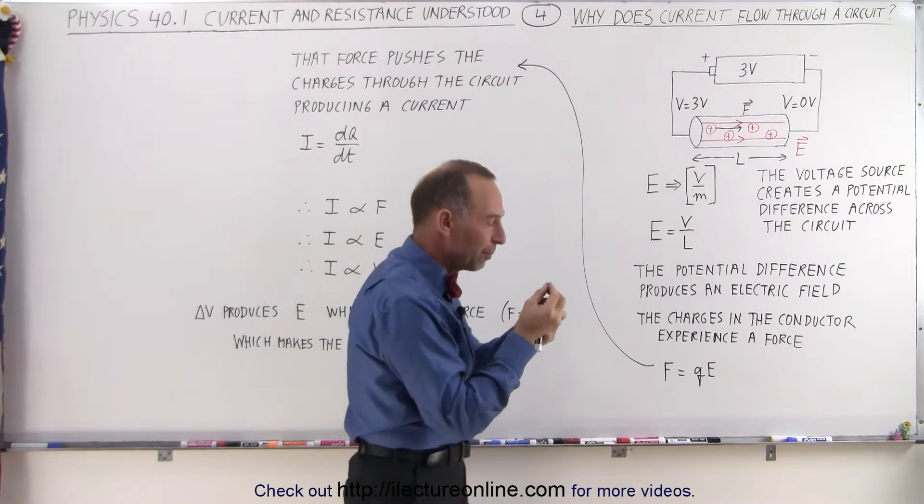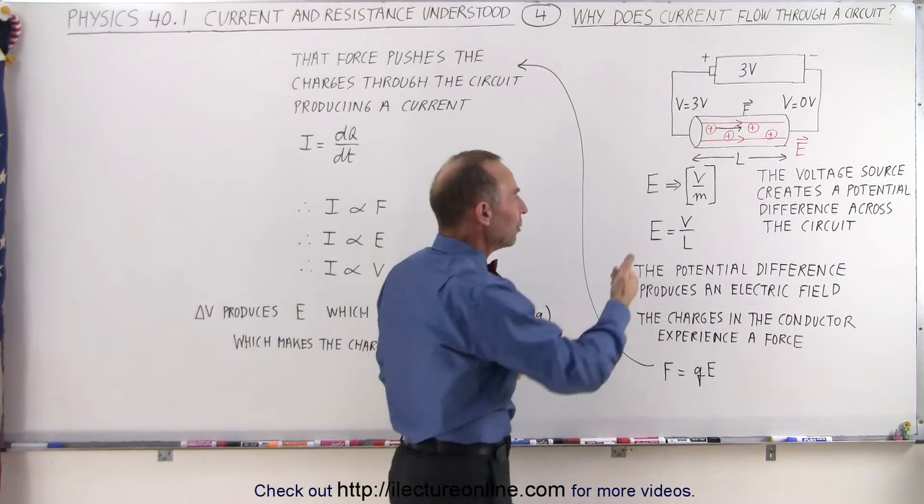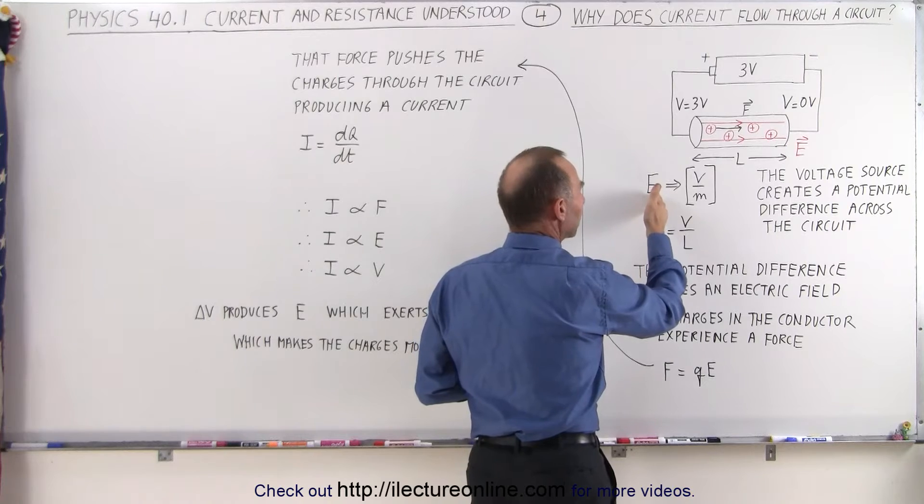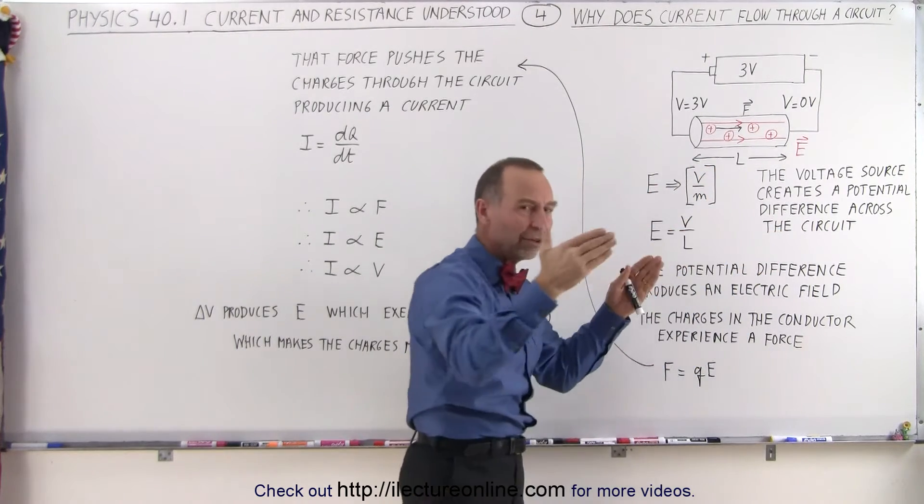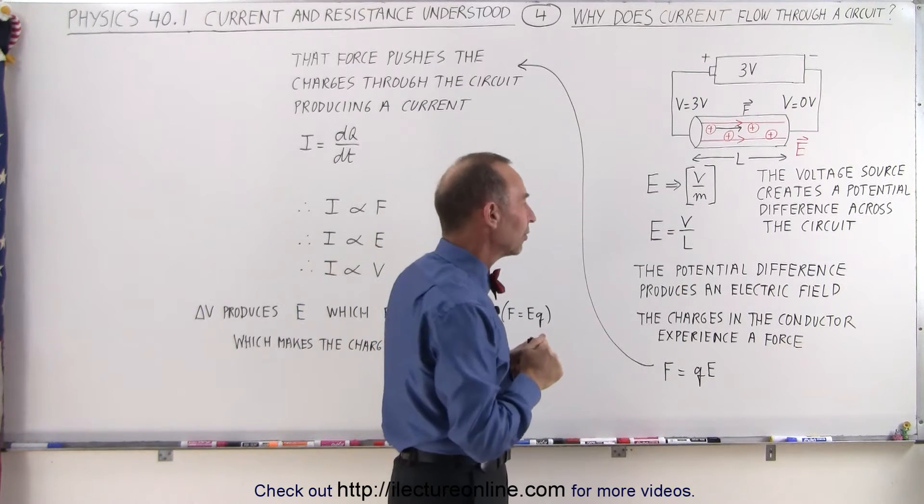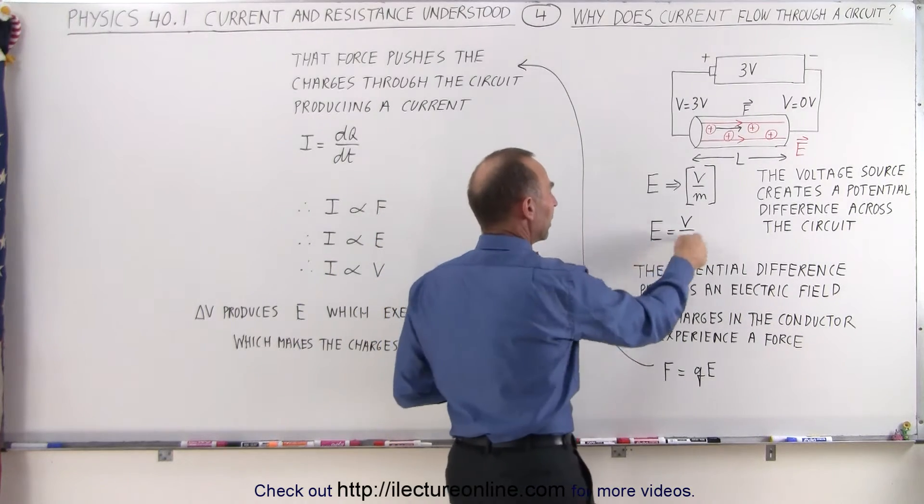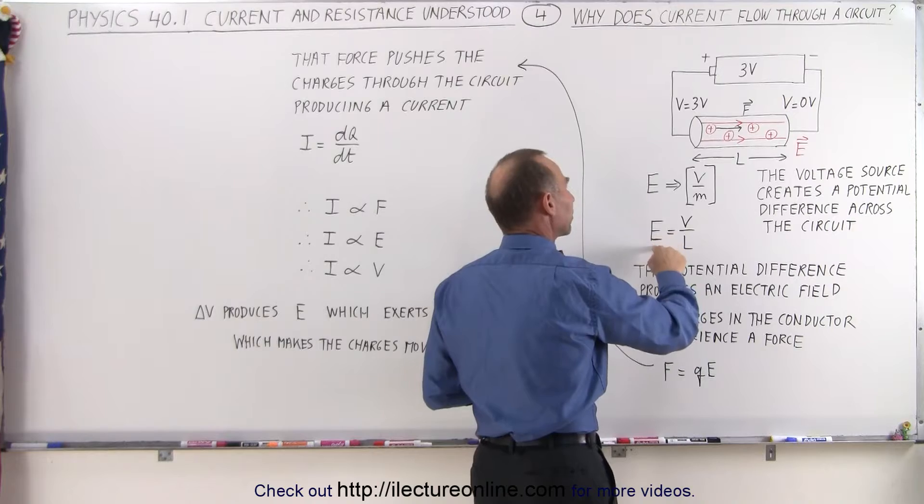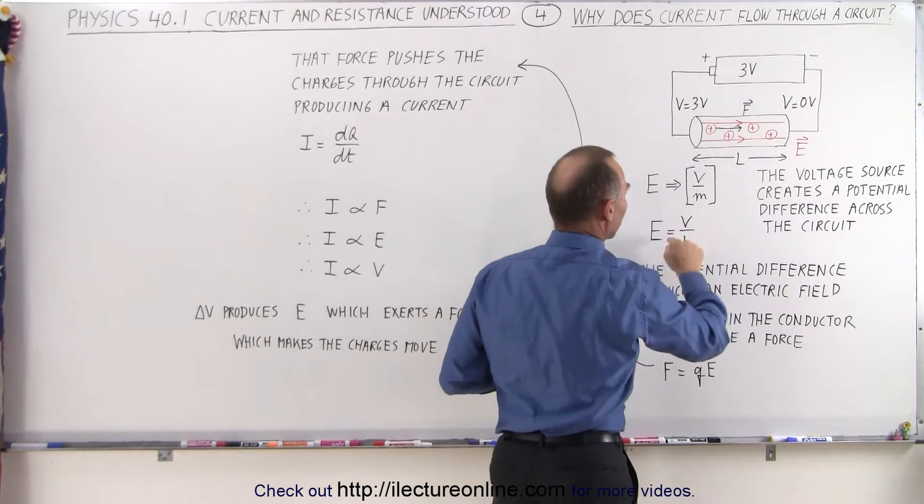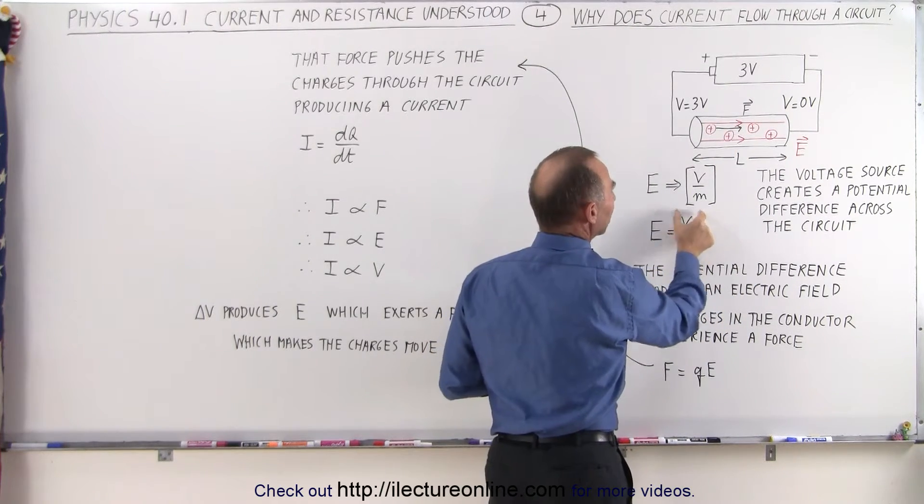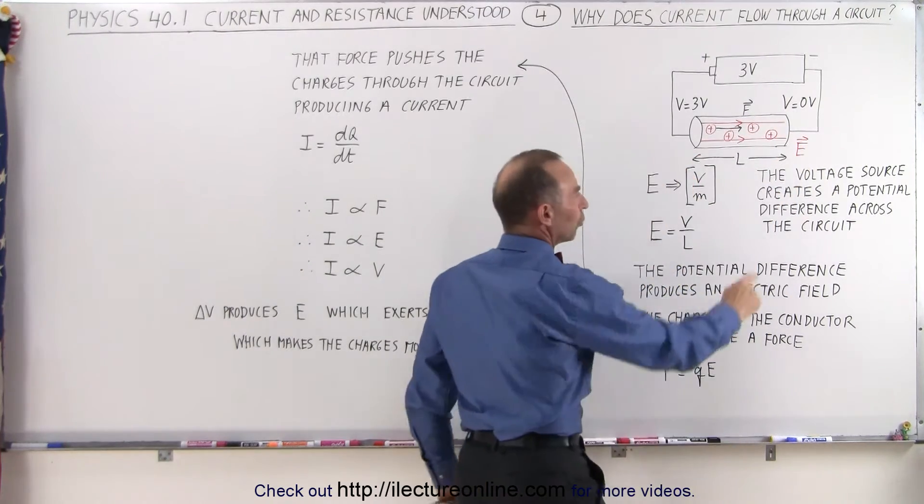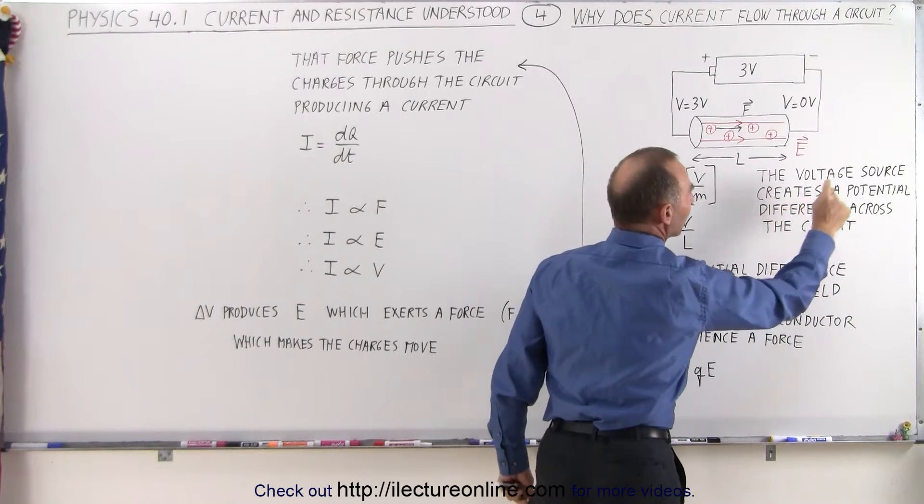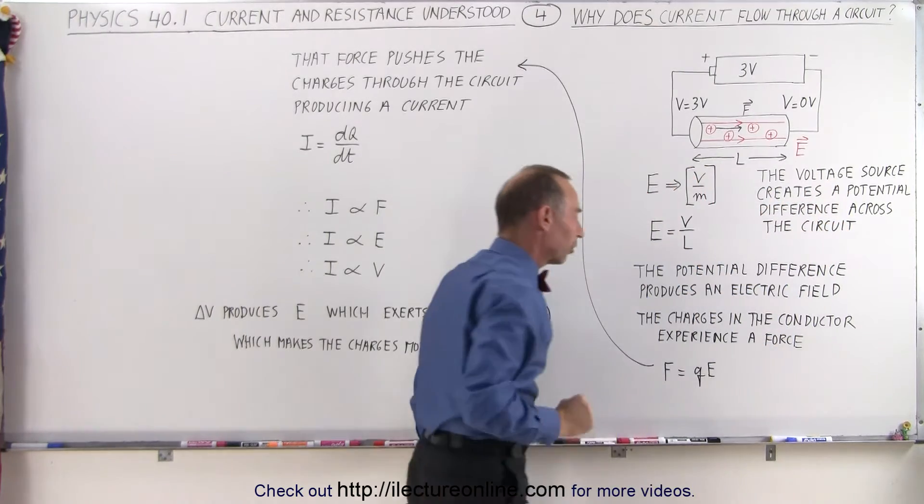Now, if we remember the concept of an electric field and the units of an electric field, they can be expressed in terms of voltage per meter, the amount of potential difference over a certain amount of length. So here we can then define the electric field inside the circuit by the potential difference applied to the circuit, the voltage applied to circuit V, divided by the length of the circuit. So the voltage source creates a potential difference across the circuit.